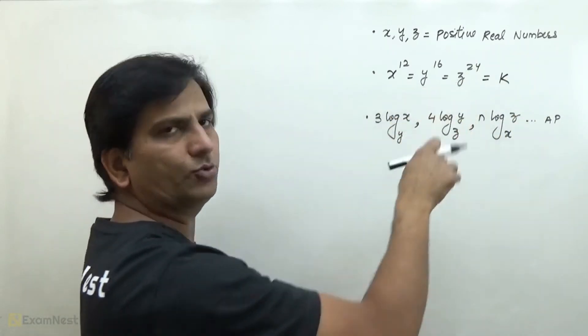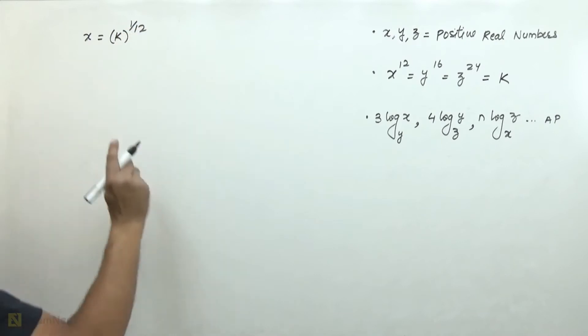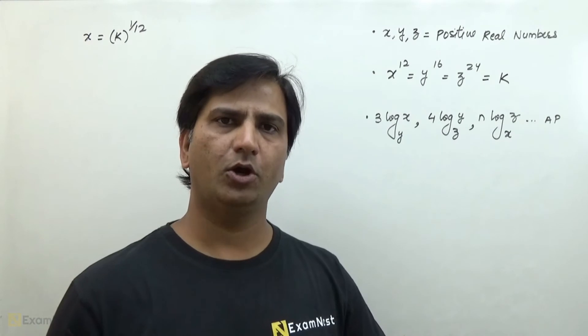the first step is to set them equal to k. Now, we can define x, y, and z in terms of k. x will be k raised to the power of 1 by 12. When power is left to right, it will change its position to the denominator.